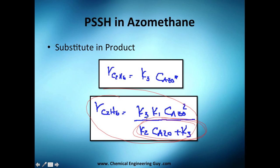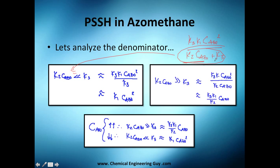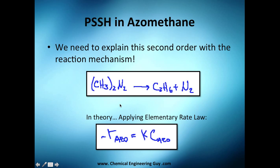The final rate expression is: r = (k₃·k₁·[ASO]²) / (k₂·[ASO] + k₃). Now consider what happens at low concentrations of azomethane — the term k₂·[ASO] becomes much smaller than k₃. In that case, you can cancel k₃ in the numerator and denominator, and you are left with k₁ times the concentration of azomethane squared — that's second order!